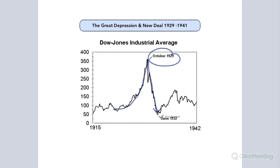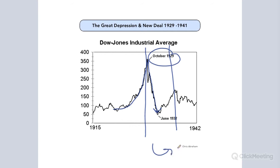That leads to October 29th — the economy is not being regulated and it crashes. This is the Great Depression. And 10 years ago I was talking about the Great Depression and the Second Great Depression, which in terms of U.S. history is from 2008 to 2010 — people losing their homes.